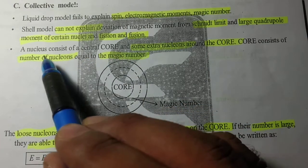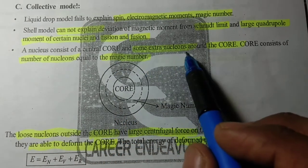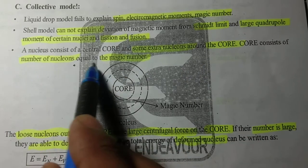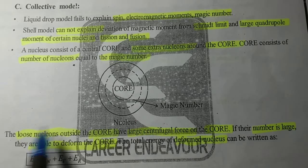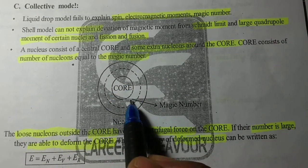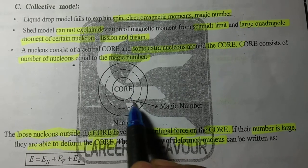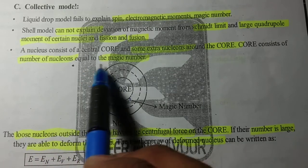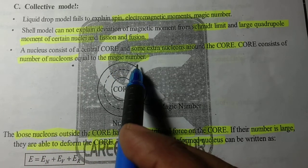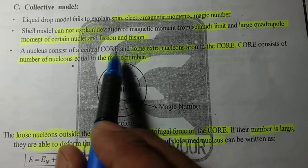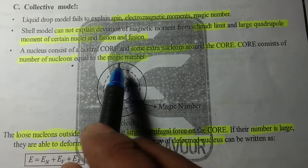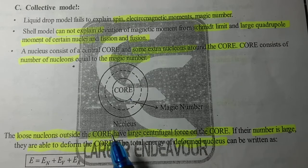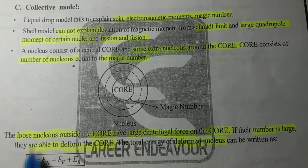A nucleus consists of a central core and some extra nucleons around the core. The core consists of number of nucleons equal to the magic number. In the collective model, the nucleus has a central core which contains a number of nucleons equal to the magic number.